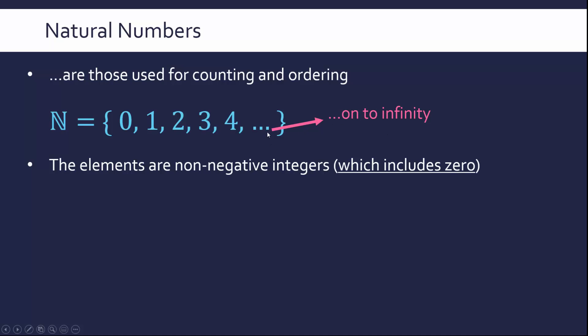The dot dot dot in set notation suggests we're going to follow that pattern. The next number in this series is not 4.5 because it's not following that pattern. Natural numbers are those which are non-negative and also include 0. Negative 5 is not a natural number because we can't use it for counting or ordering.